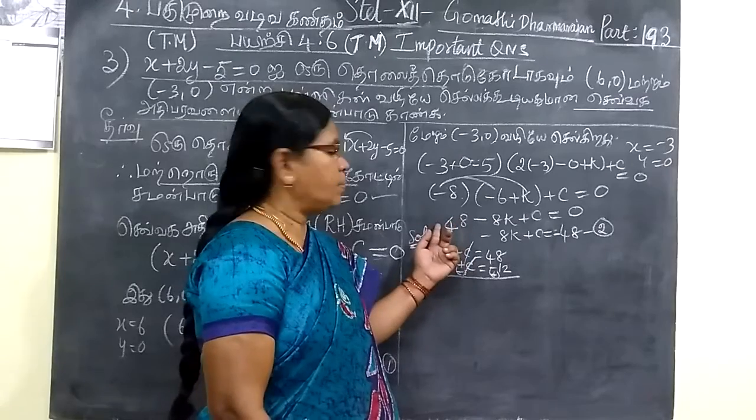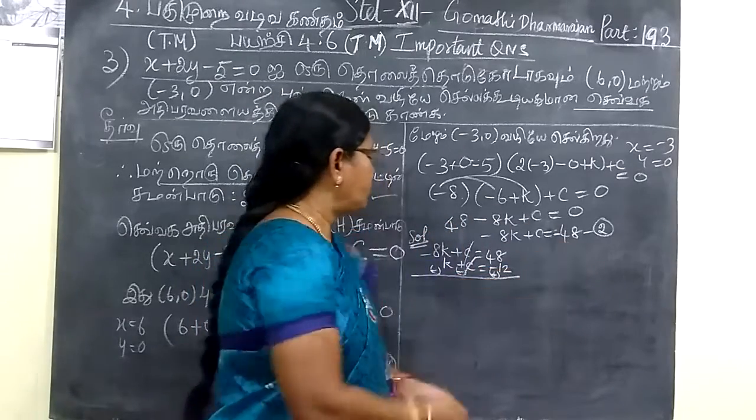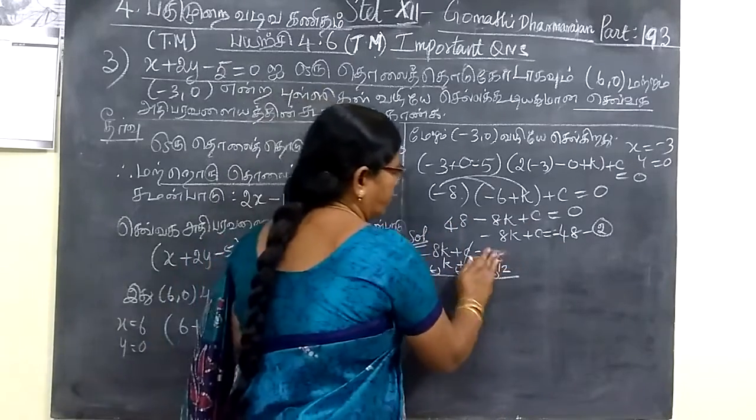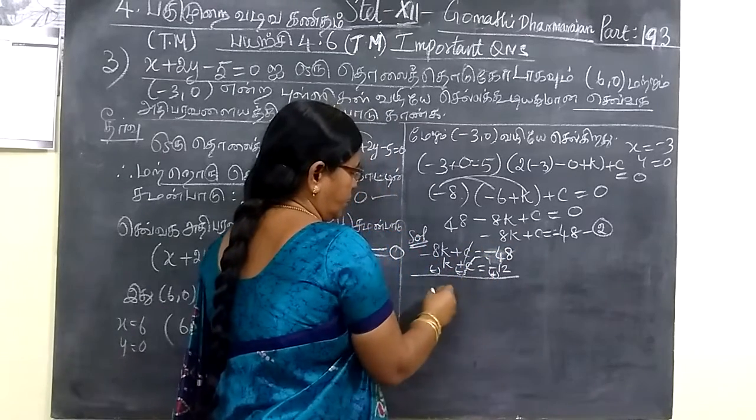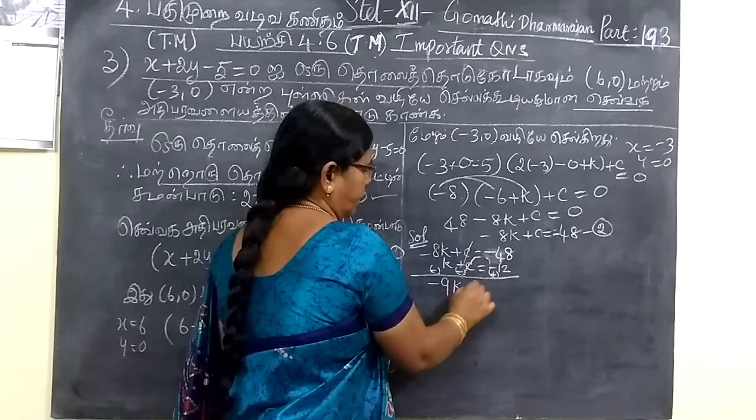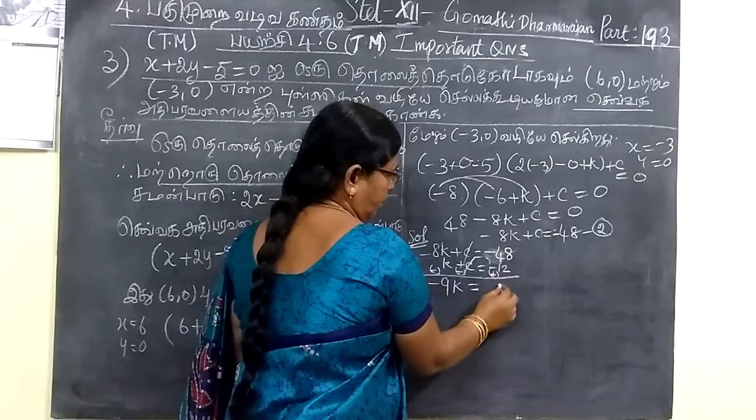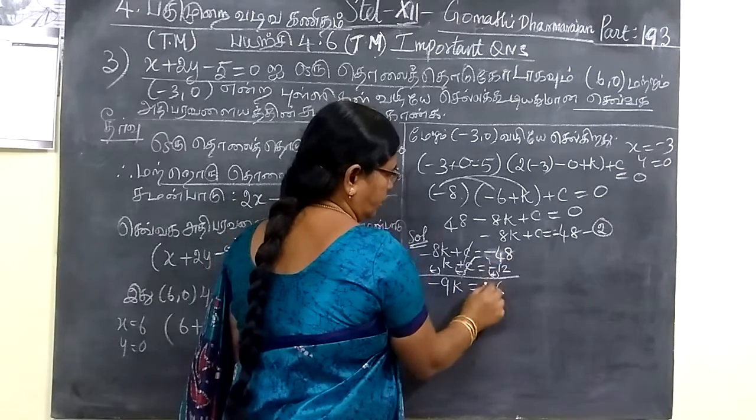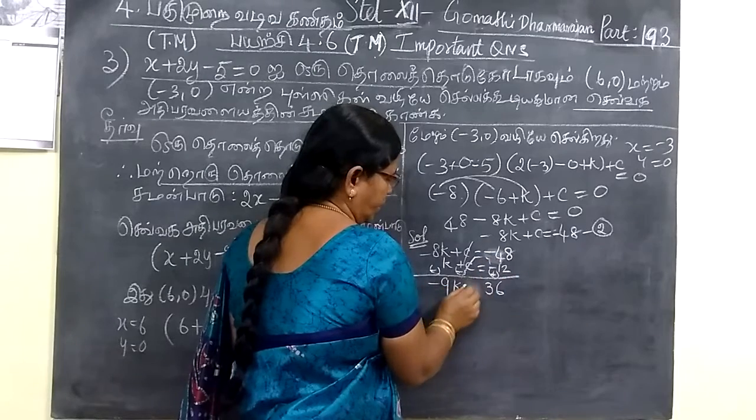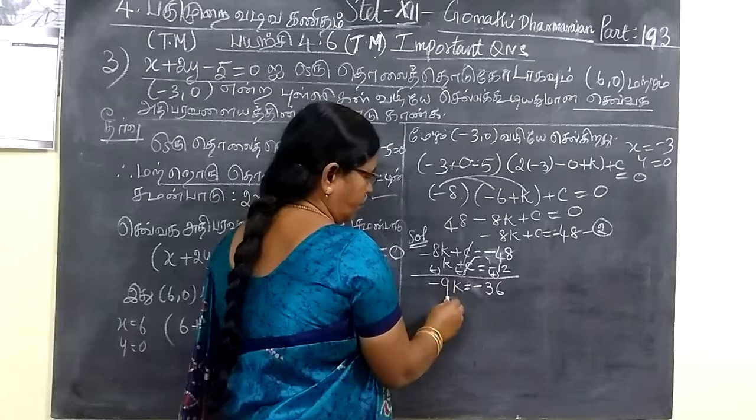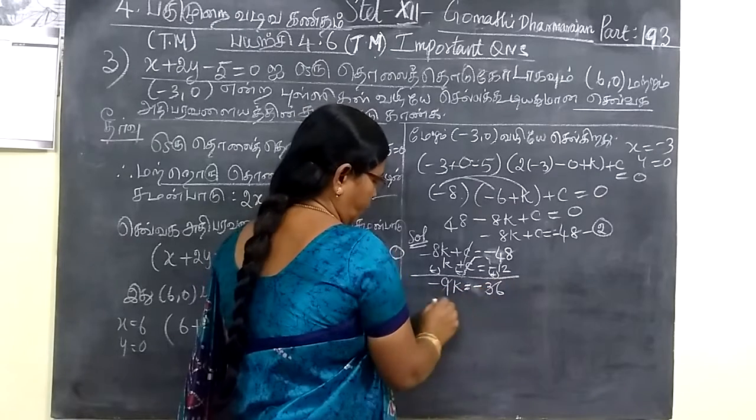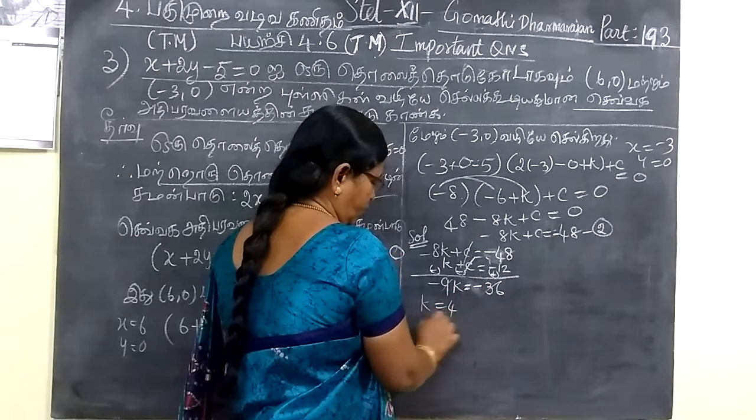This is plus 48 and the other is minus 48. So this is minus 48. Then c cancels. This is minus 9k equal to... then 8 minus 2 is 6, this is greater number sign minus. So minus cancels, k equal to 4.